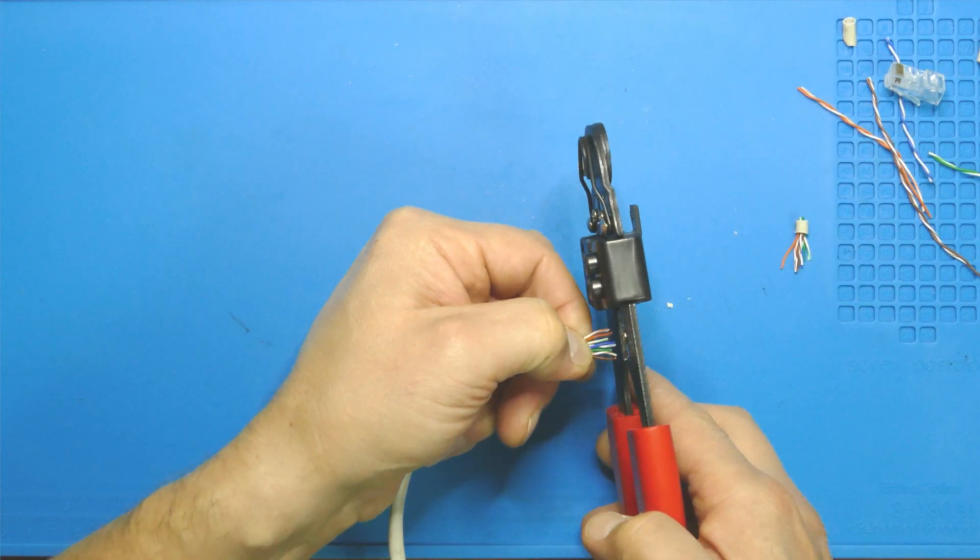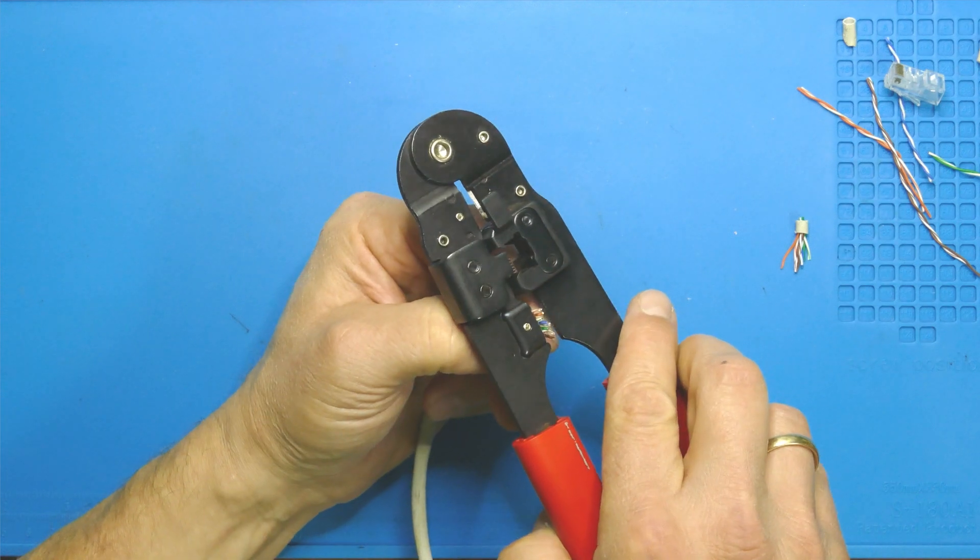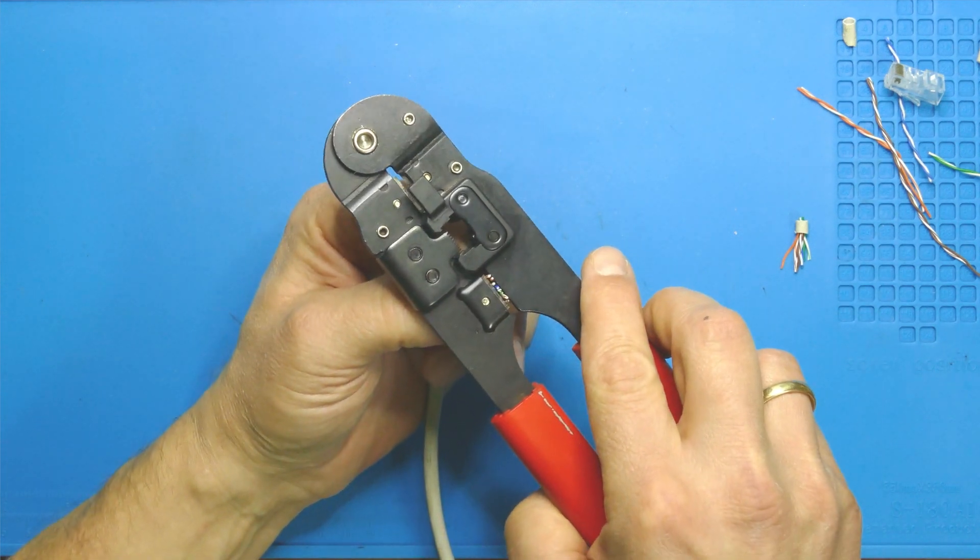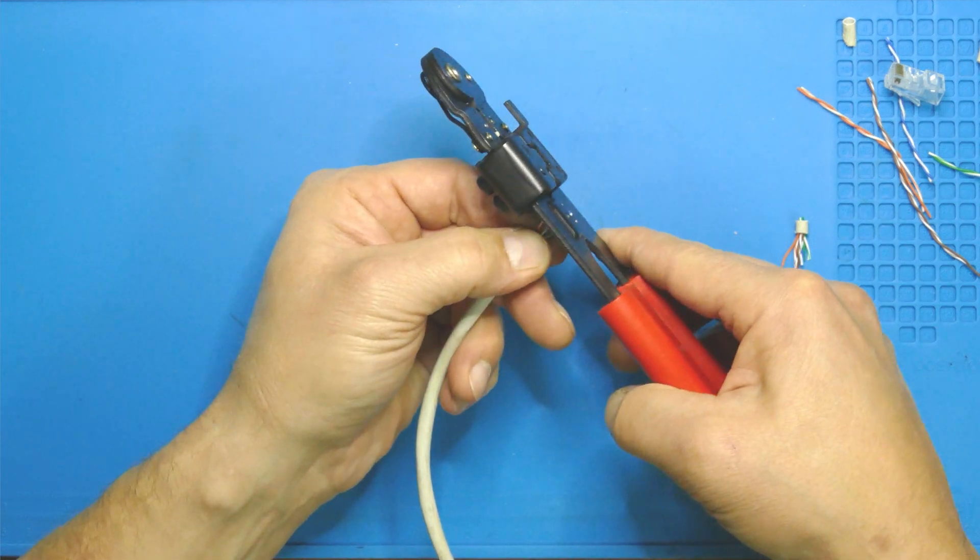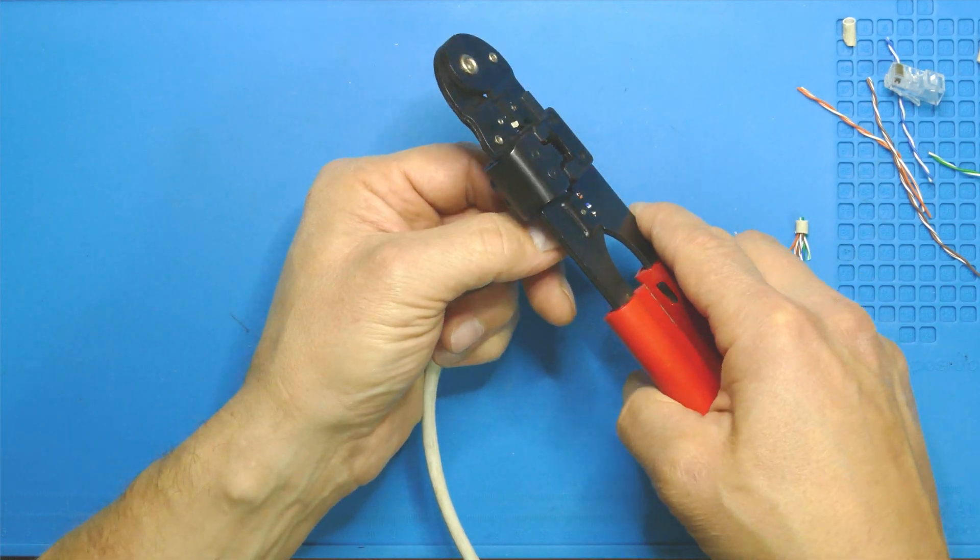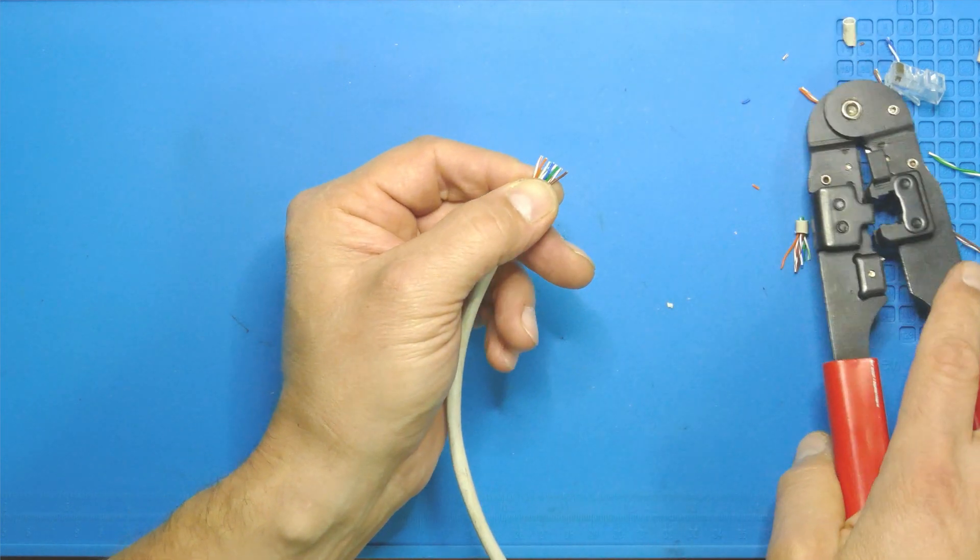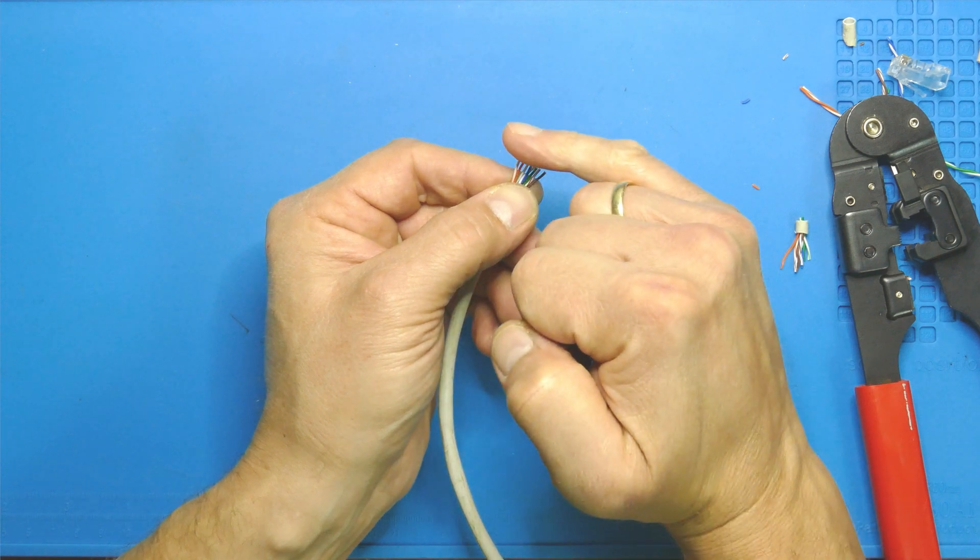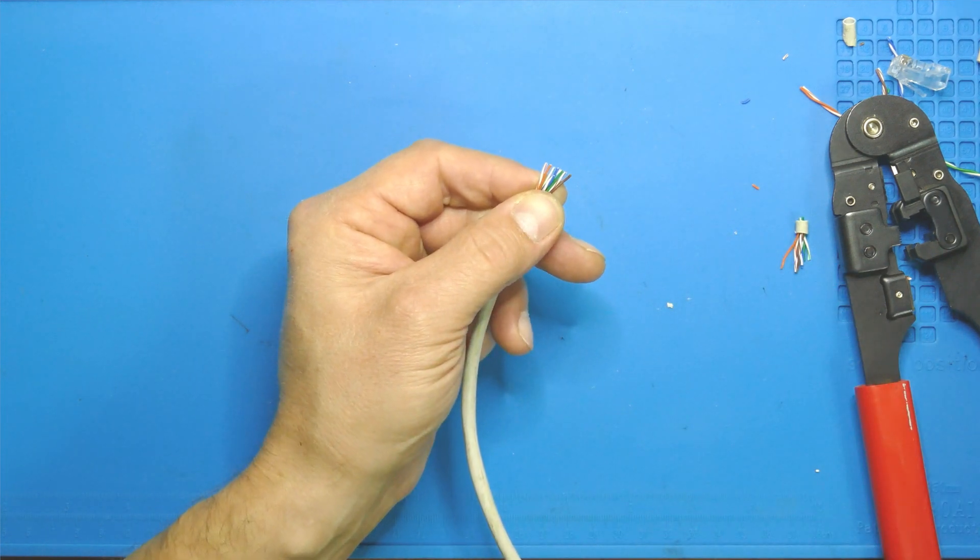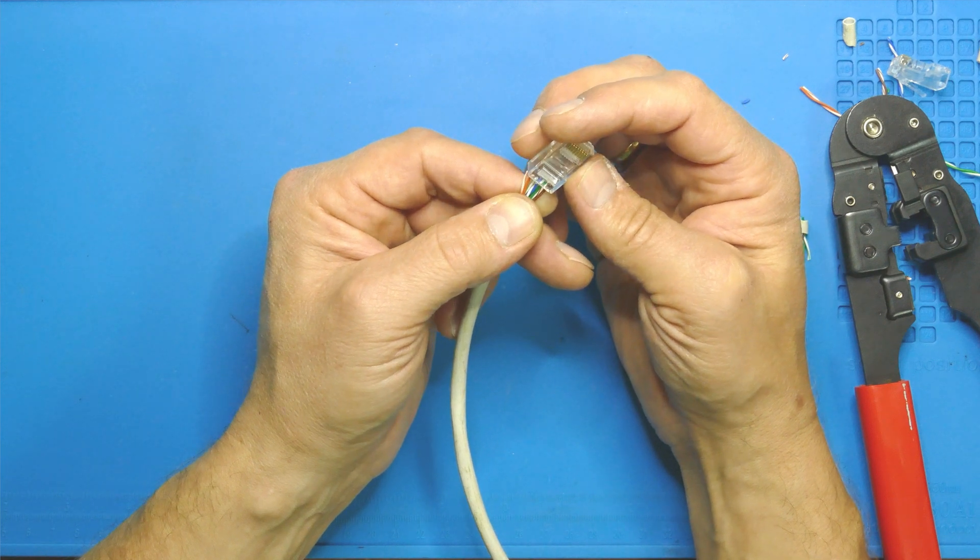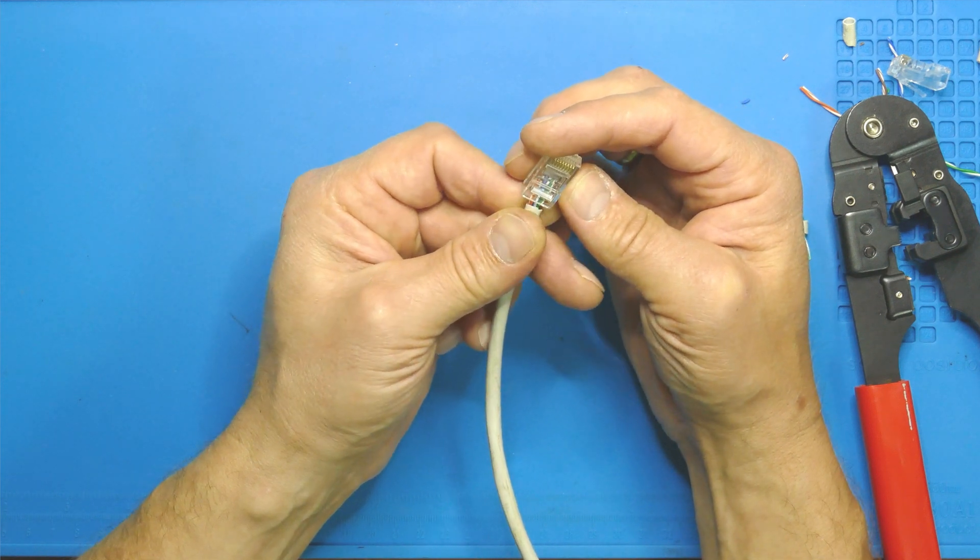And next thing we do, we just cut the cable's excess a little bit just so that they are all at the same height or distance. Just cut them off and you can see them nicely forming a nice line. And then we can take that connector and push them into the connector.